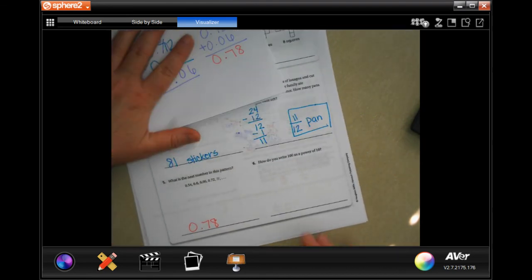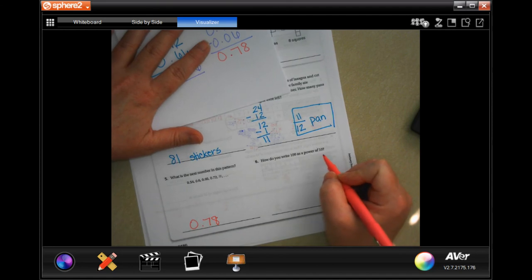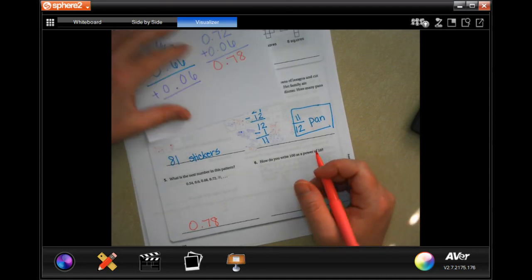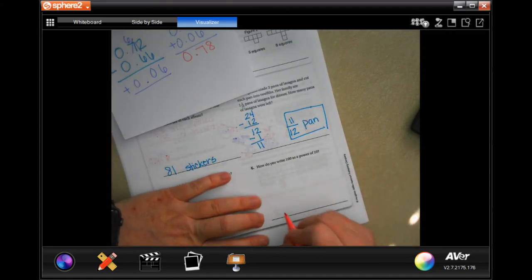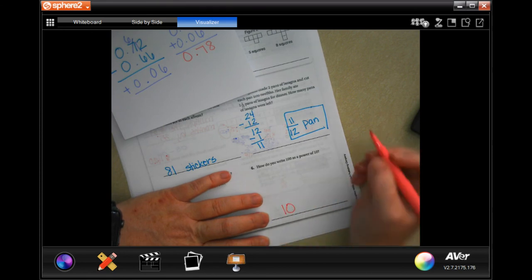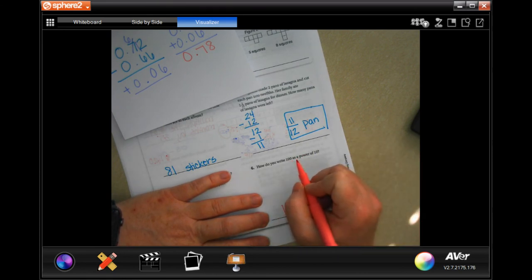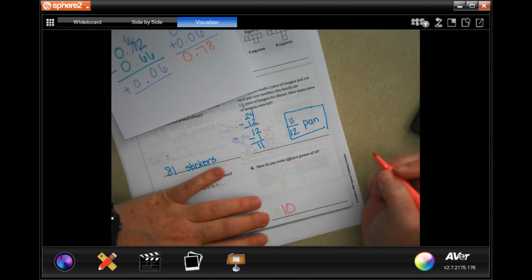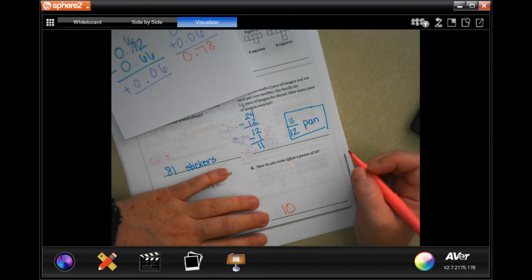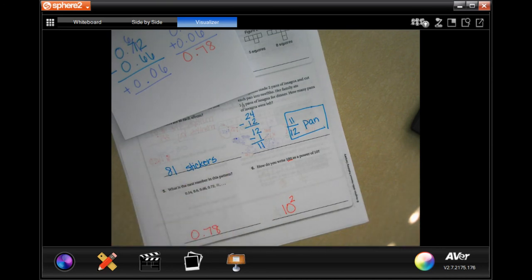How do you write 100 to a power of 10? Y'all are going to love this. 10, and my exponent is equal to the number of zeros I have in my original number. I have two zeros in 100, so it's 10 to the power of 2. That's it, all done.